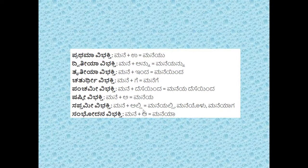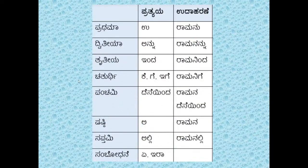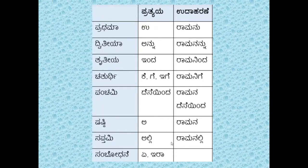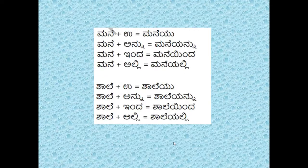I have referred to previous question papers from the 10th board exam to show how questions are given. For rama: ramanu, ramananu, ramaninda, ramanige — you need to select which suffix is suited for the blank. Ramana, ramanalli — sambhodana is not there. These are some examples from previous year question papers.